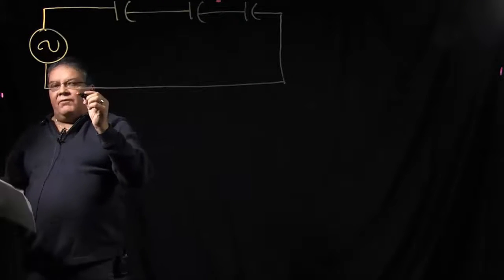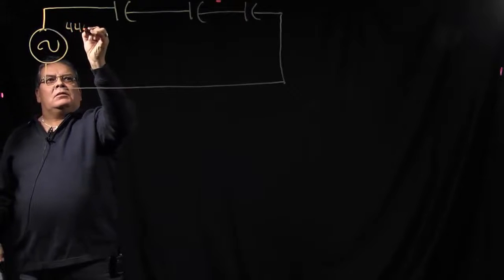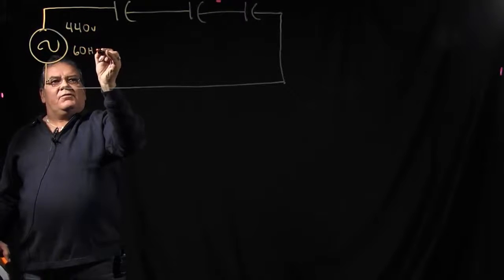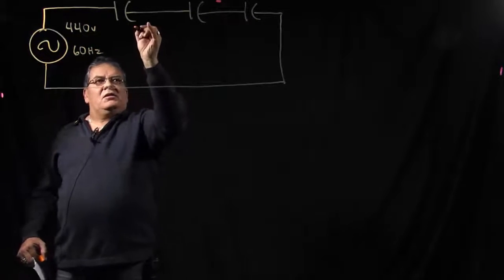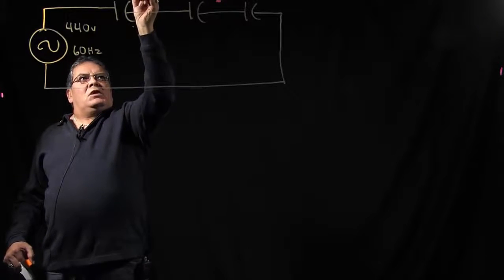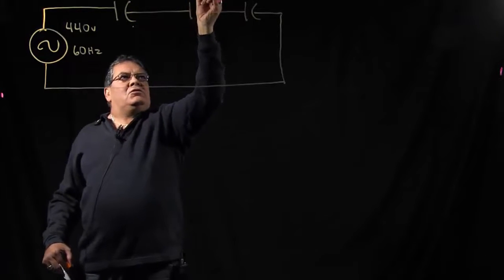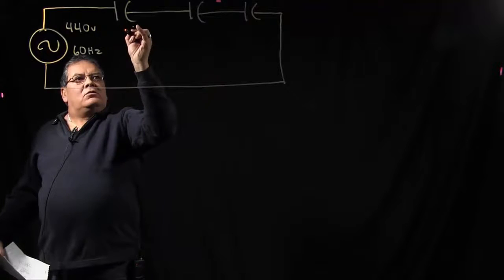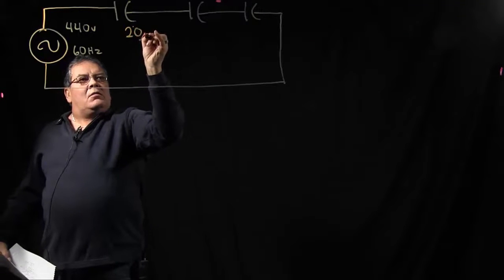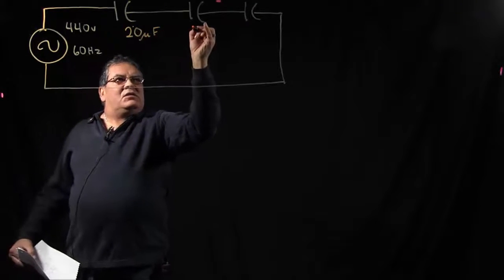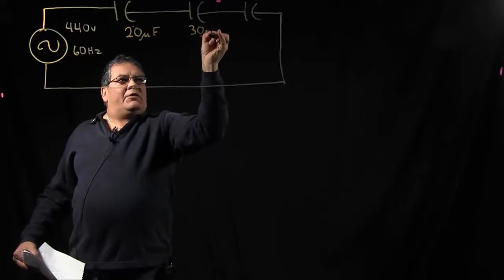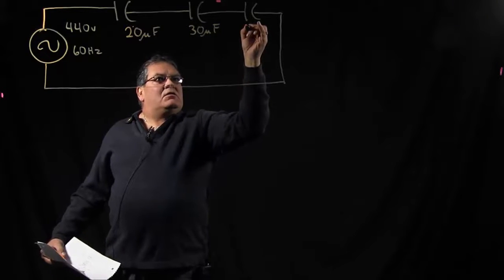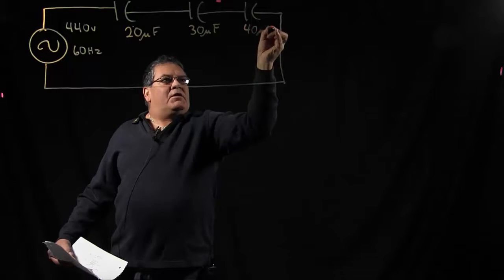We're going to use a 440 volt AC supply with 60 hertz of frequency. Our first capacitor is C1, C2, and C3. C1 is equal to 20 microfarads, C2 is 30 microfarads, and C3 is 40 microfarads.